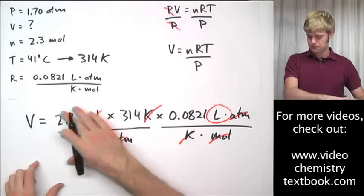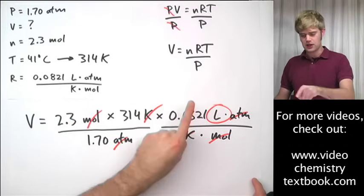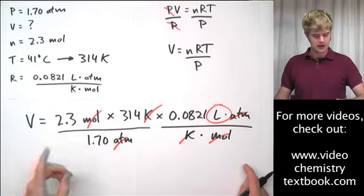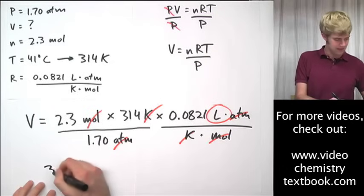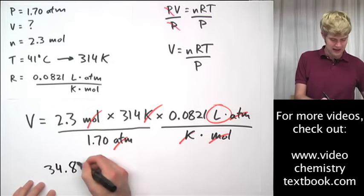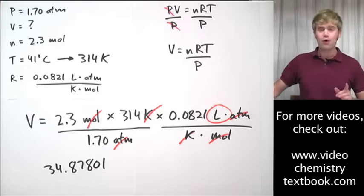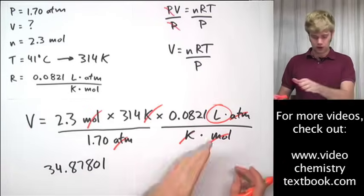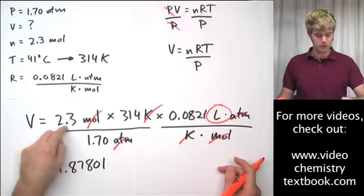Now, it's time to put all this math into my calculator. I'm going to do 2.3 times 314 times 0.0821, all of that divided by 1.70. The answer that I'm going to get is 34.87801, all right? How many digits do I round this to? Okay? I look for the number up here that has the fewest significant figures. That's here. 2.3 moles.